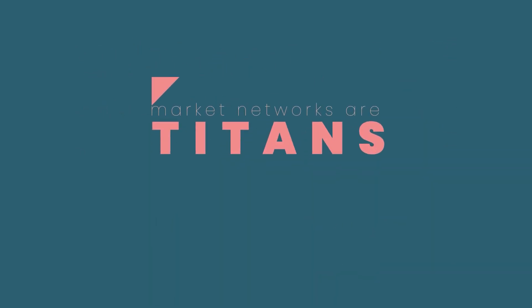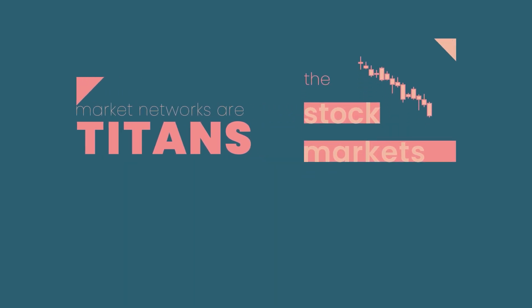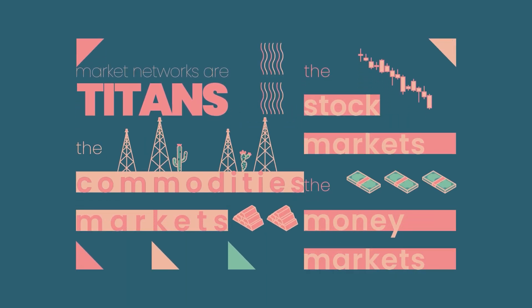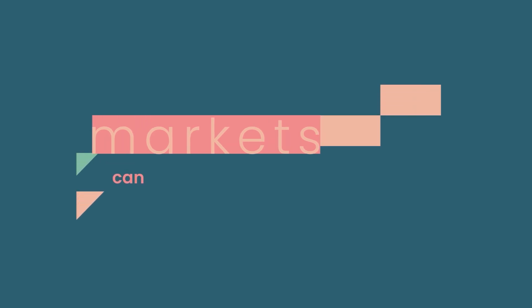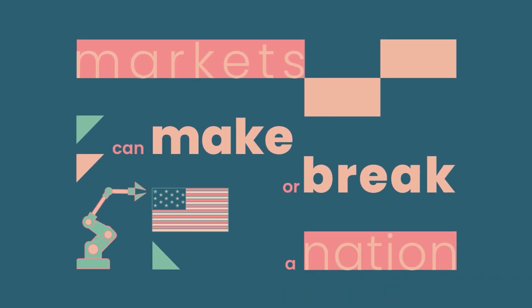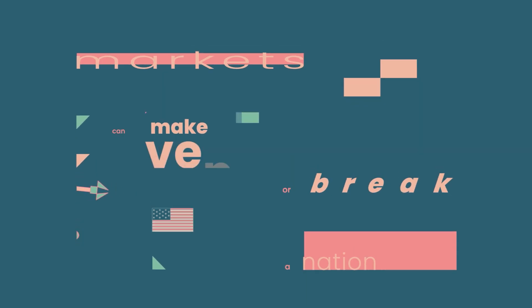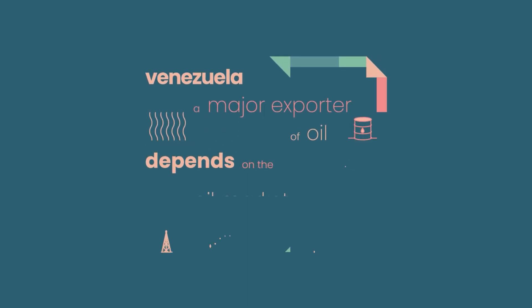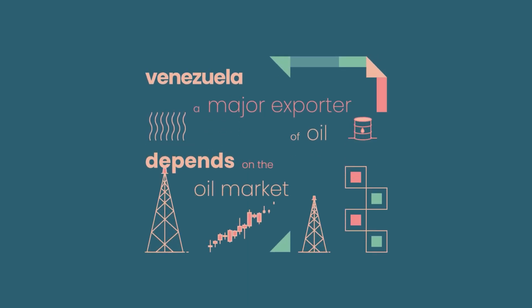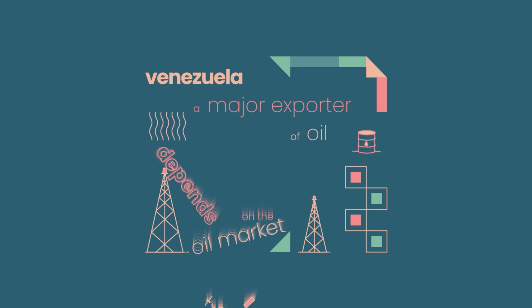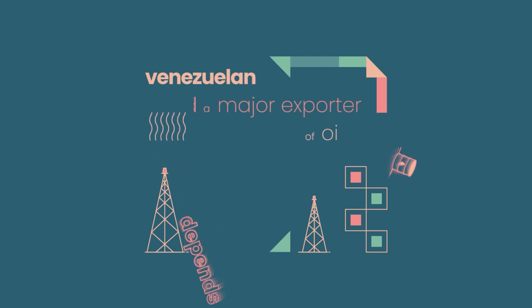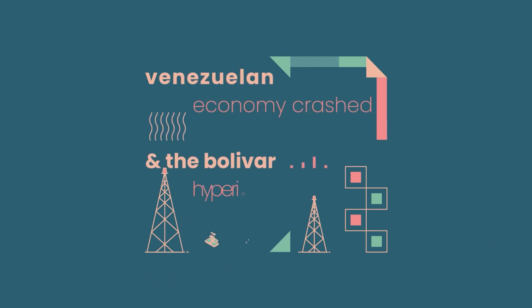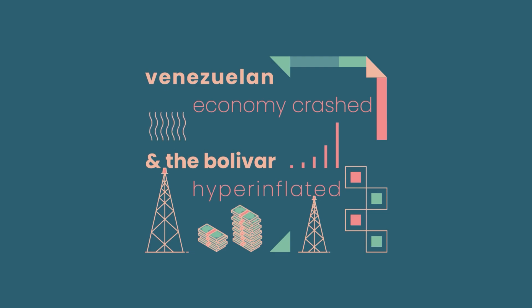The market networks are titans — the stock markets, the commodities markets, the money markets. A market can make or break a nation. For example, Venezuela, a significant exporter of oil, depends on the oil market. When there was a collapse in oil prices, the Venezuelan economy crashed, and their currency, the Bolivar, hyperinflated.